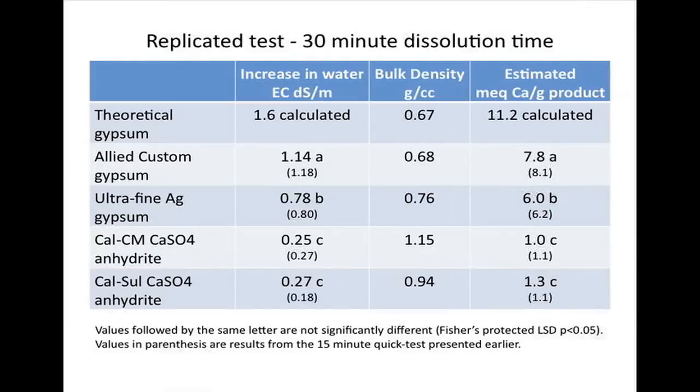Finally, we conducted a replicated trial where we added 1.25 cc's of each product to 500 cc's of water and allowed the materials to dissolve with periodic stirring over the course of 30 minutes. As you can see from the table, the gypsum products dissolve fairly rapidly, releasing more than half of the calcium per gram of product compared to the theoretical dissolution rate. The calcium sulfate anhydrite products release far less calcium per gram of product. Rapid dissolution of calcium amendments is particularly important for water amendments by injection of gypsum or for sodium management prior to leaching events. For this reason, we recommend that you use gypsum calcium sources that dissolve rapidly in water.